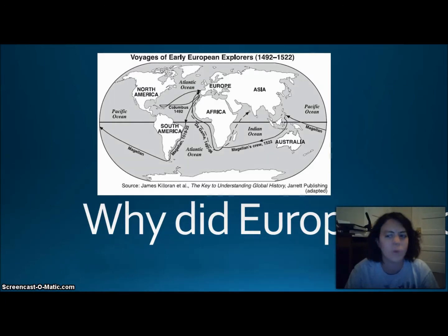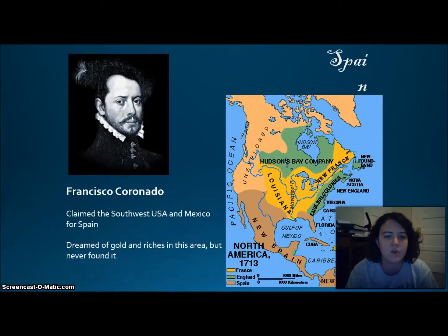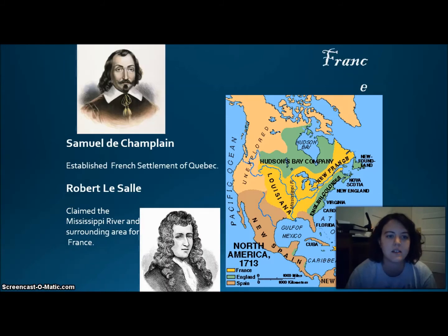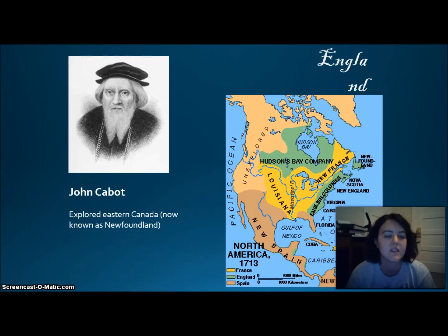Why did the European countries come here? Looking at Spain, Francisco Coronado claimed the southwestern United States and Mexico for Spain — he dreamed of gold and riches but never found them. From France, Samuel de Champlain established the French settlement of Quebec, and Robert LaSalle claimed the Mississippi River and surrounding area for France. From England, John Cabot explored eastern Canada, the area now known as Newfoundland.